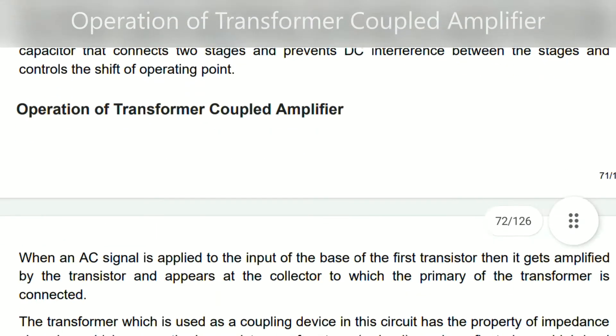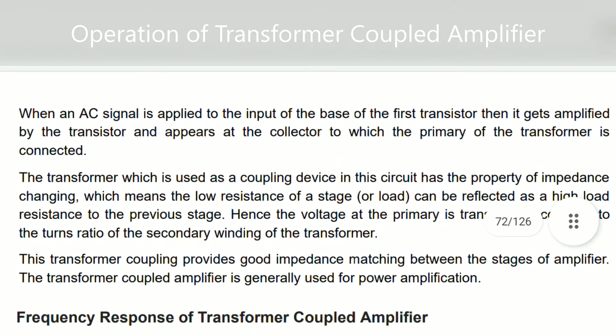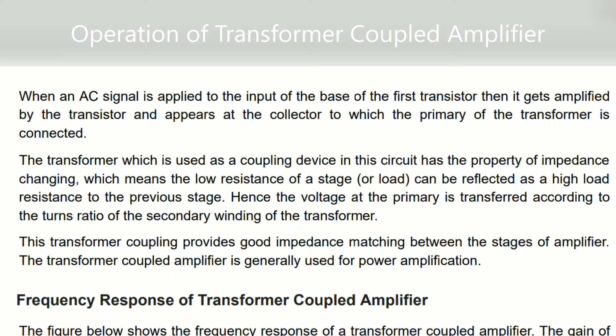Now let us see the operation of the transformer coupled amplifier. When an AC signal is applied to the base of the first transistor, it gets amplified by the transistor and appears at the collector, to which the primary of the coupling transformer is connected. The input signal is amplified and appears at the collector of the first stage transistor, and the output is taken through the coupling transformer.